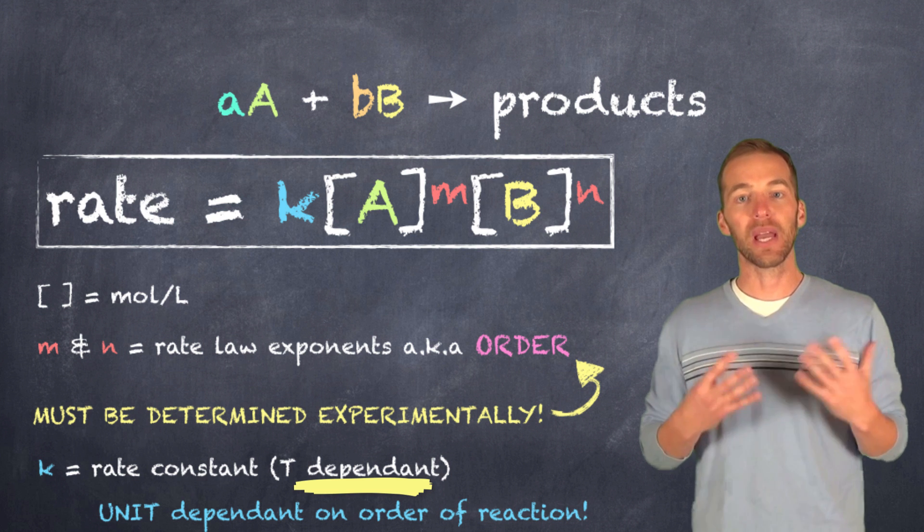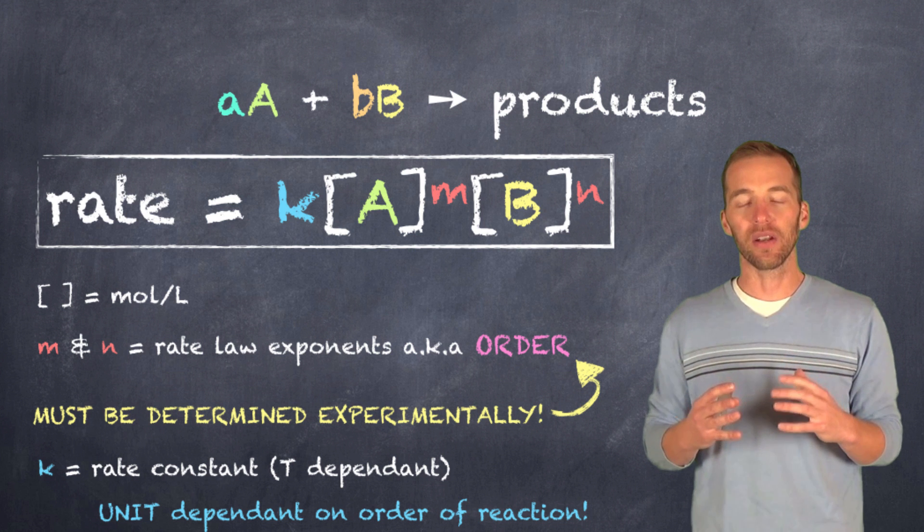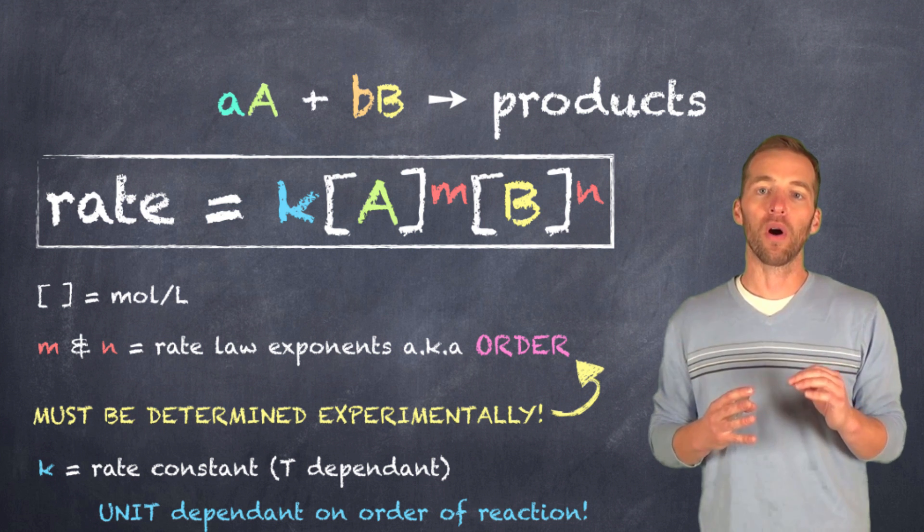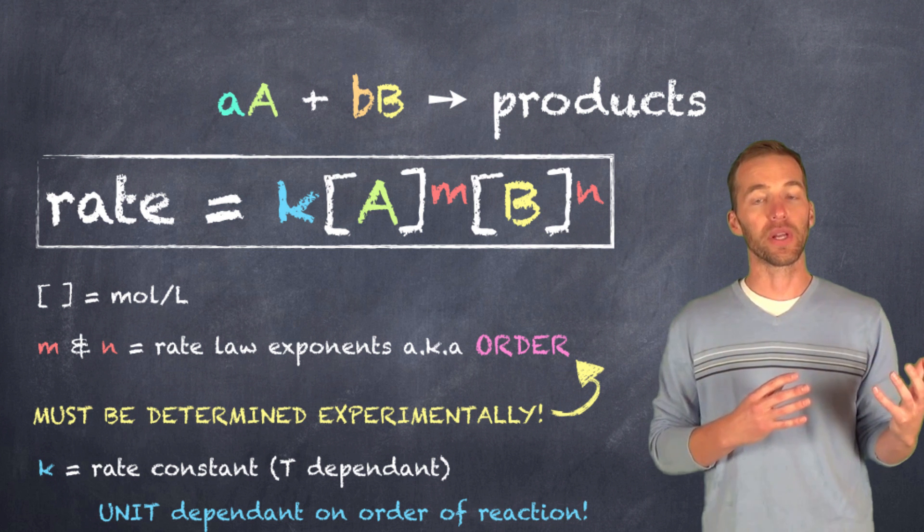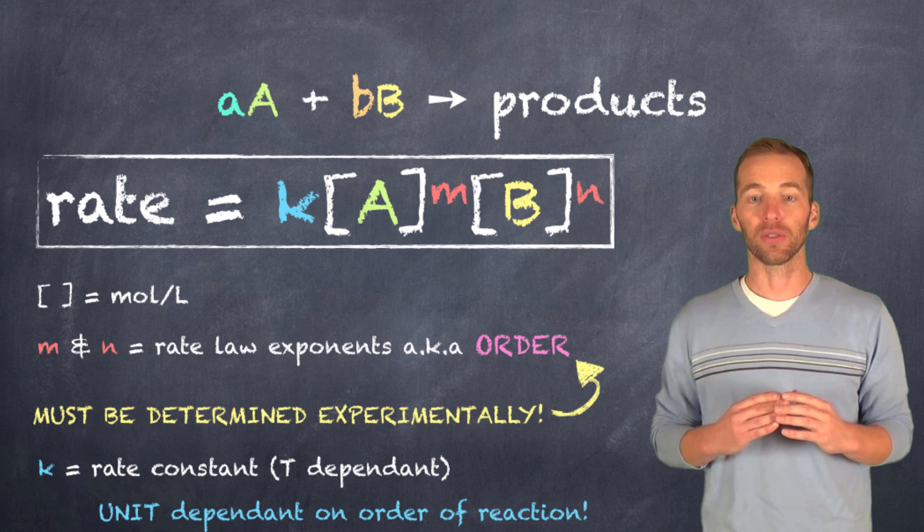If the temperature goes up, K will also go up. If the temperature goes down, K will also go down. So K is going to be dependent on the temperature of that particular reaction. So we don't want to change the temperature. That is, we want to hold it constant when we're trying to evaluate K through various experimental trials.